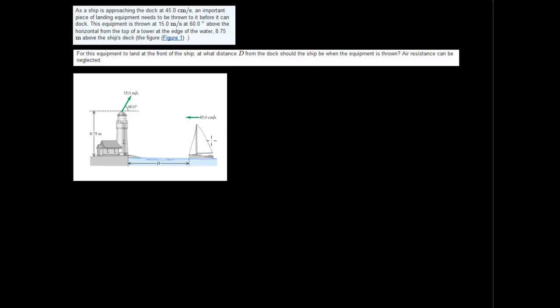So we are given this figure here, which represents the ship being at a distance D away from the projectile, which is 8.75 meters in the Y direction above the ship. The first thing I am going to do is change that 45 centimeters per second into meters per second velocity of the ship, because that is just there to throw you off. So, 45 centimeters per second equals 0.45 meters per second. Now we got our units correct.